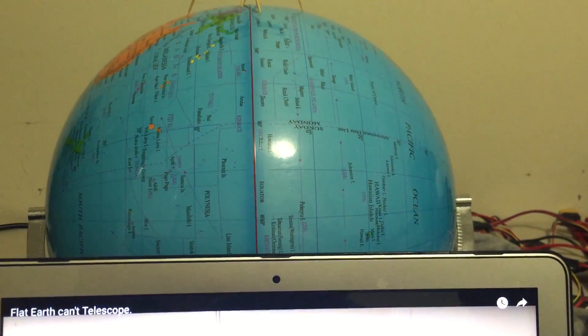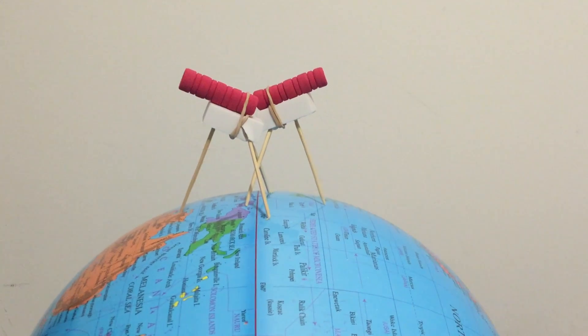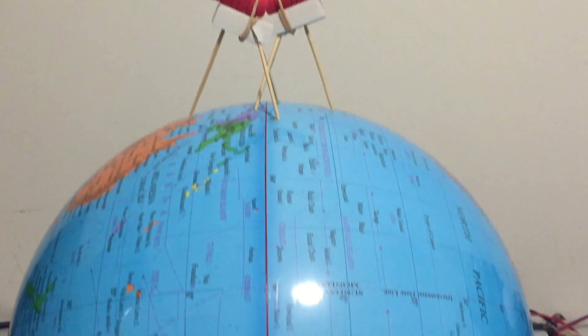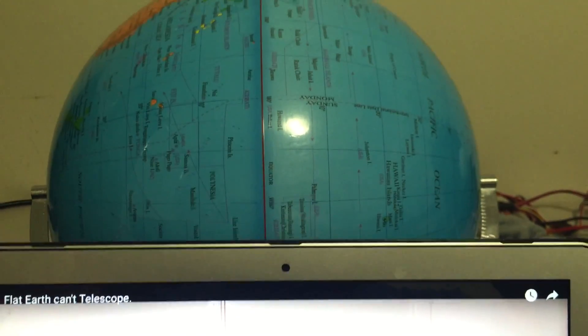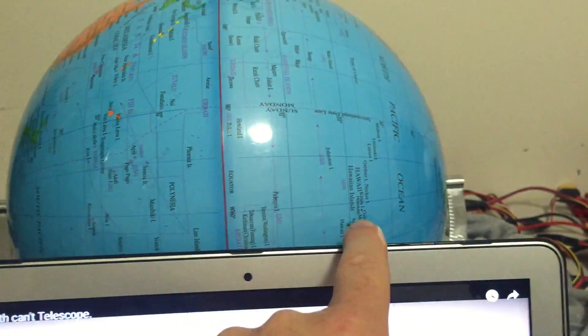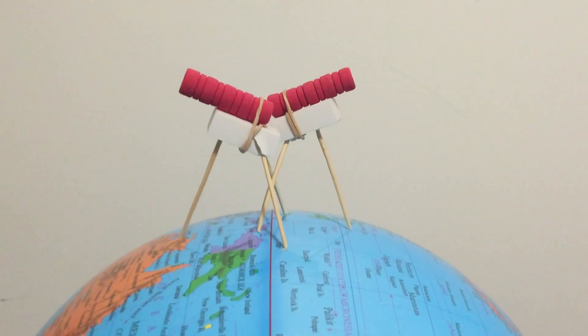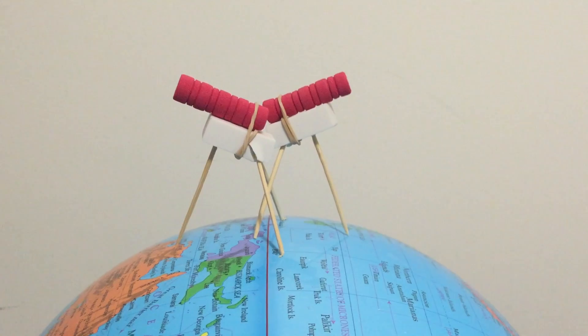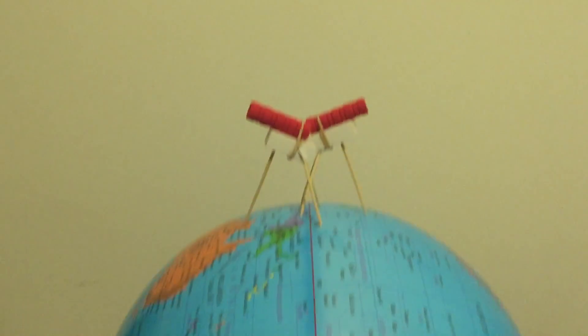So to help you understand this clearly I've now put both telescopes just over the equator on this globe. Now I've got the globe lying down so that the axis of rotation is horizontal in the video, level with the top of the laptop. Now as you can see when both telescopes are at the same location on the earth they still have that discrepancy in the angle.